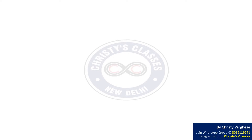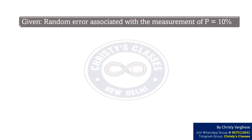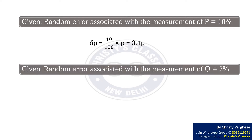It is given that the random error associated with the measurement of P is equal to 10%, which can be written as delta P equal to 10 by 100 into P, that is equal to 0.1P. Also, it is given that the random error associated with the measurement of Q is equal to 2%, which can be written as delta Q equal to 2 by 100 into Q, that is equal to 0.02Q.